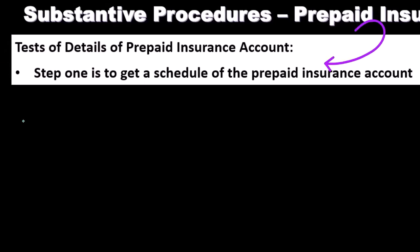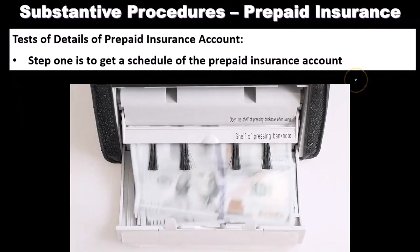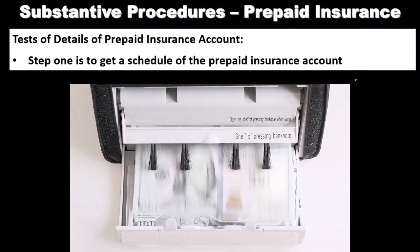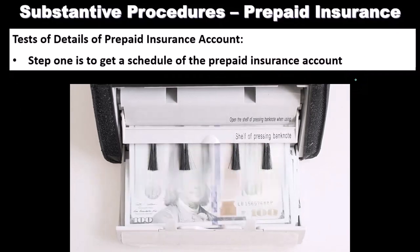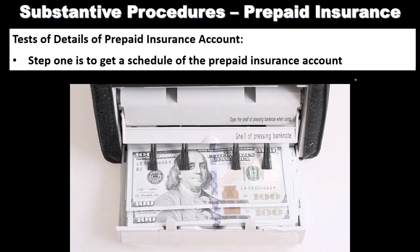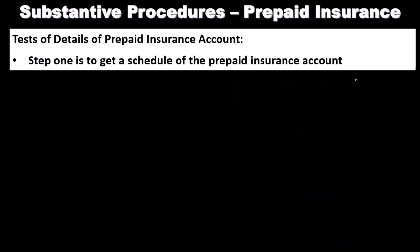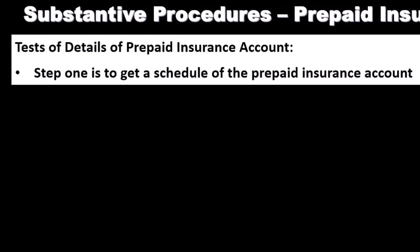Step one is to get a schedule of the prepaid insurance account. We're going to need a schedule and we'll also need the insurance policy itself — those are the two key things we typically need. If we get the trial balance, we'll look at the prepaid line and request the GL account. Most of the time the company will be posting their payments to the GL account of prepaid insurance.